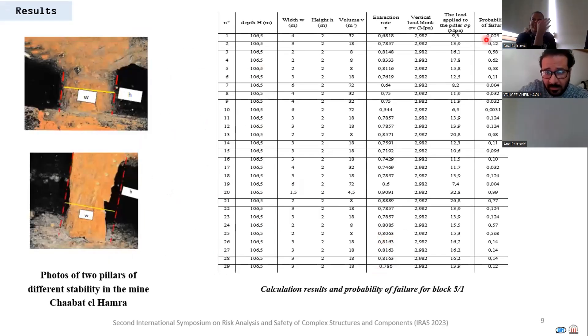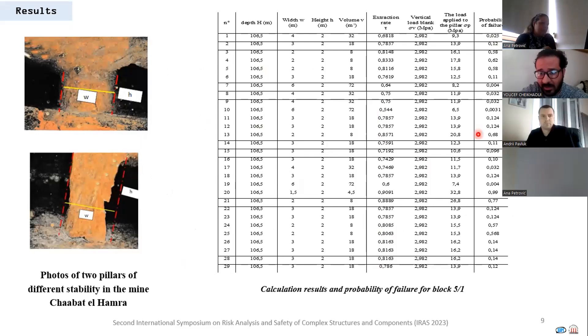This table presents calculation results and probability of failure for 29 pillars. We noted by comparing the results obtained that there is an intense relation of dependence between probability of failure and the slenderness, as well as the extraction rate.